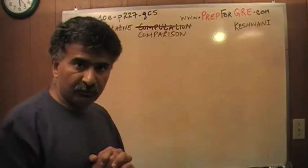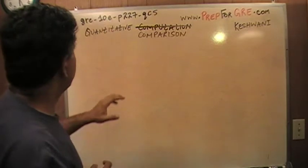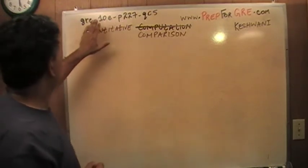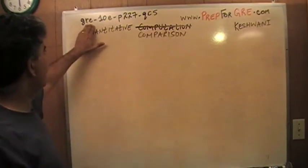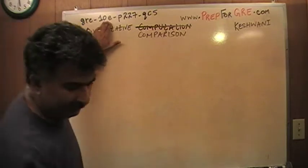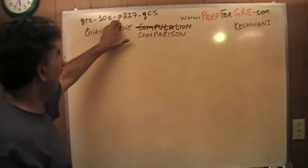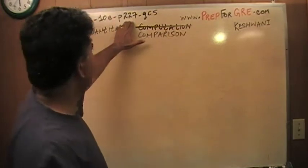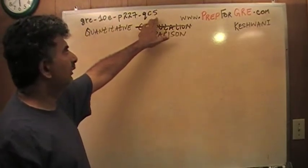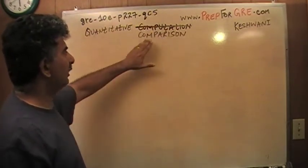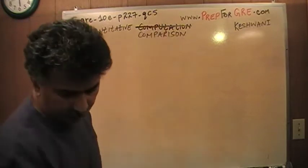The problem that I'm about to solve is the one that you're going to find on page number 227 in that book. The tag that I use is GRE-10E, 10E for the 10th edition, page 227. Quantitative comparison question, QC stands for quantitative comparison, number 5. Let's take a look at it.